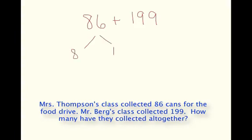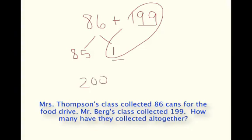Of course, I could think of this as 85 plus 1. So here, 199 plus 1 is 200, plus 85 equals 285.